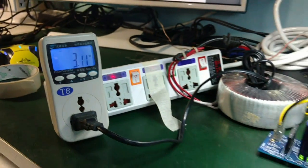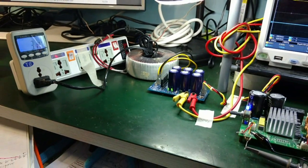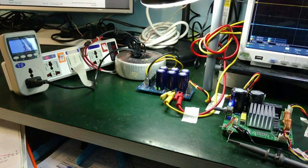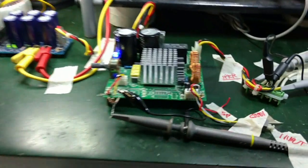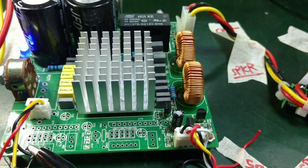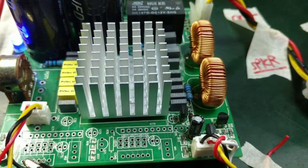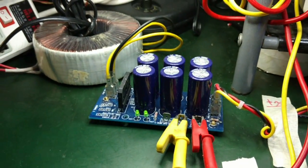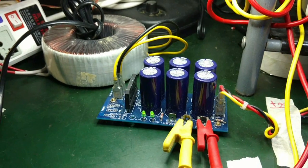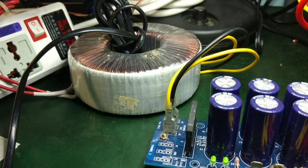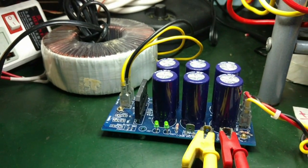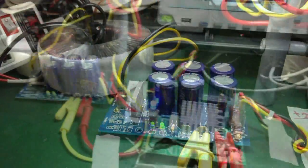Effectively, this is the system sleep mode power consumption. To get the effective power consumption of the Class D chipset, we need to subtract the power that is being consumed by the toroidal transformer and the SPS filter board.